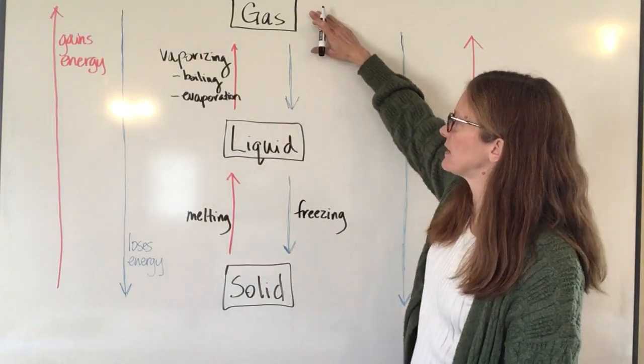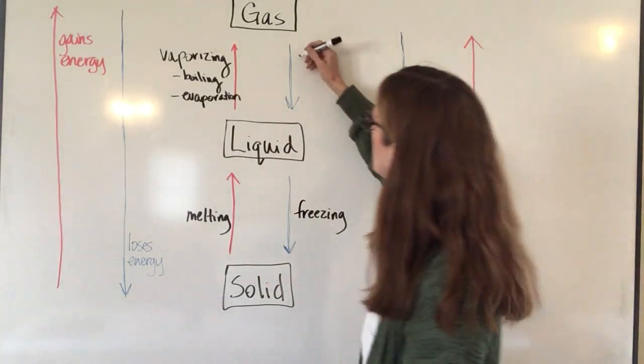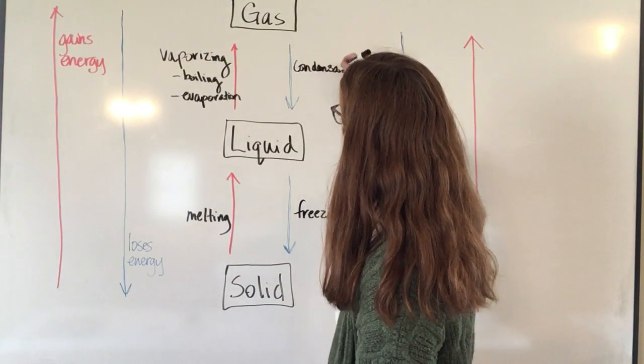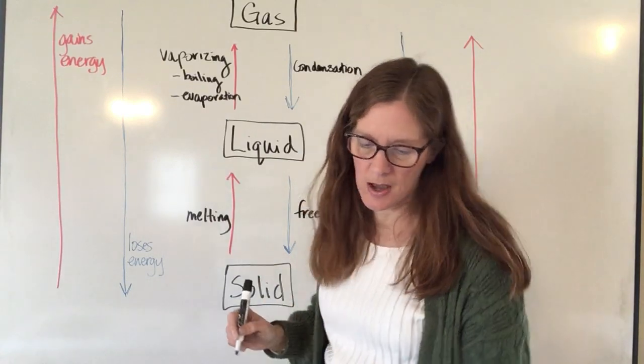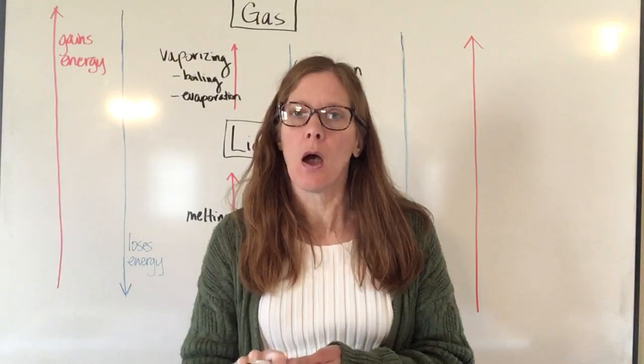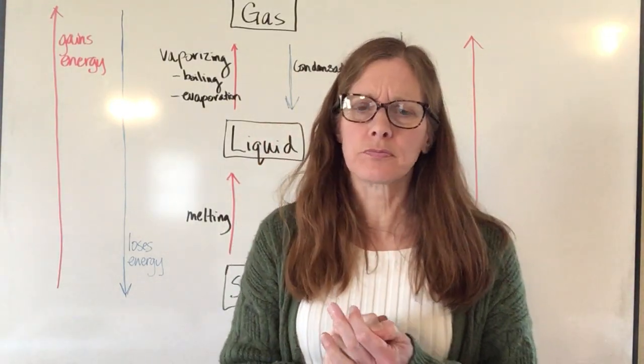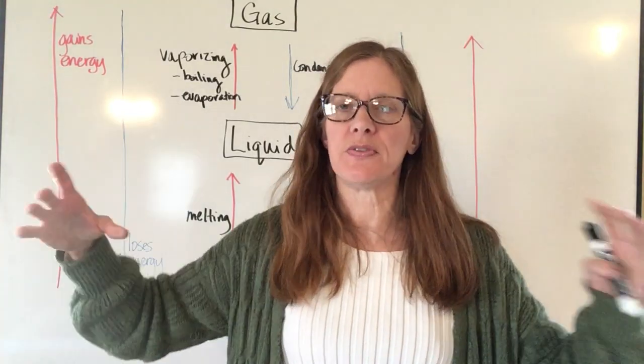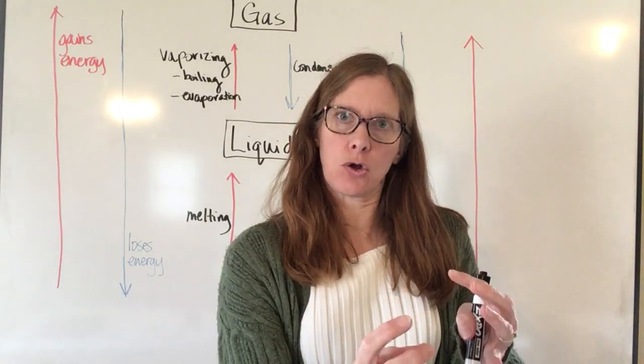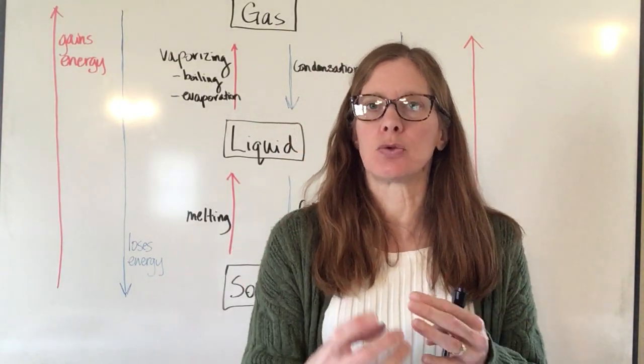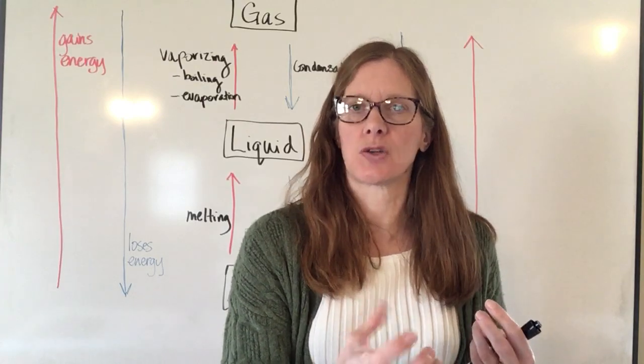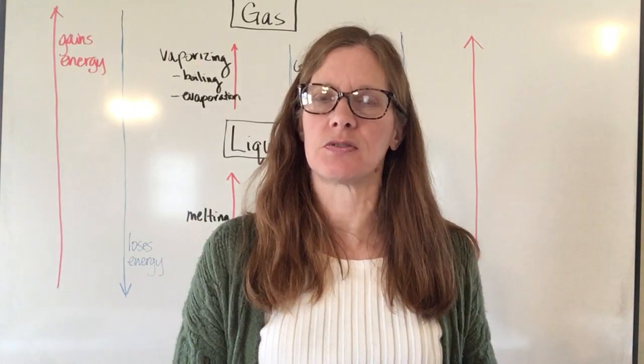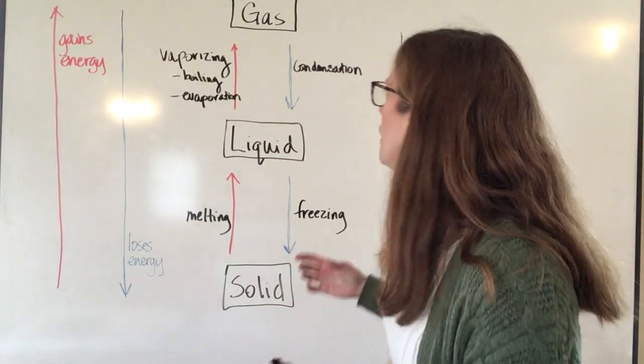Then if I'm going to take that gas and I'm going to turn it back into a liquid, that is called condensation. You can often see condensation happening when you have a cold glass of something outside on a hot day, and the water molecules in the air will hit that cold glass and then they will condense into the liquid form. Then that's how your glass gets all wet. You're not like your glass is leaking, it's just the water molecules in the air that condense on the side of the glass because it's cold.